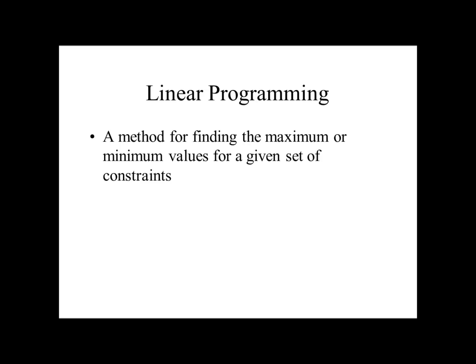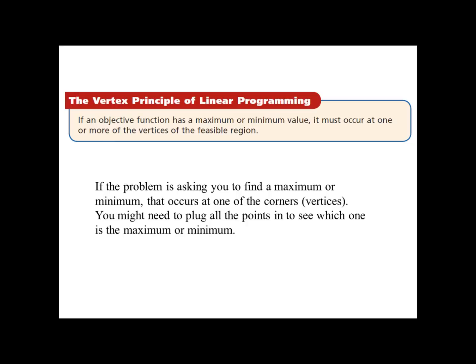Linear programming is the idea of taking these constraint equations and either maximizing or minimizing values. The way we approach this is with the vertex principle of linear programming. It says if an objective function has a maximum or minimum value, it must occur at one or more of the vertices of the feasible region. So if the problem is asking you to find the maximum or minimum, it's going to occur at one of these vertices.